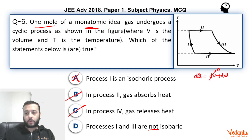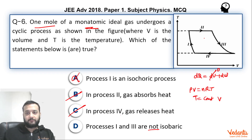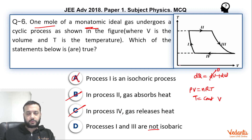The claim that Process 1 and 3 are not isobaric — actually 1 and 3 would be isobaric if they were a straight line passing through the origin. For an isobaric process, pressure is constant, and from PV = nRT, we get T = (constant) × V, which is a straight line through the origin. Since Processes 1 and 3, when extrapolated, do not pass through the origin, they are not isobaric. So this option is correct.